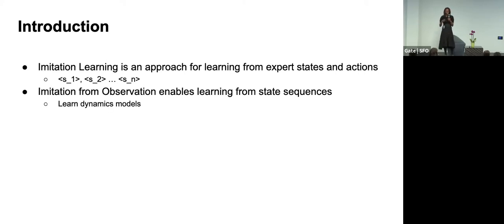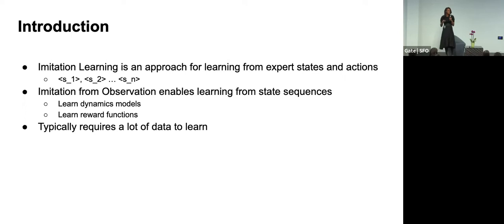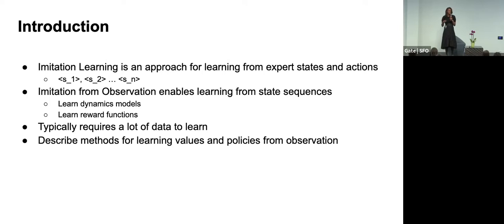There are a couple of different methods in the literature for training agents from videos alone. The first mechanism learns dynamics models in the agent's environment — it walks around, figures out how the dynamics work, and uses that model to predict which actions were taken in a video. Another approach is to learn reward functions and use those to train reinforcement learning agents. The problem with both approaches is that they typically require a lot of data to learn.